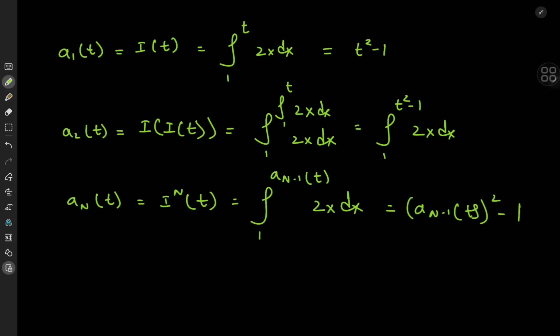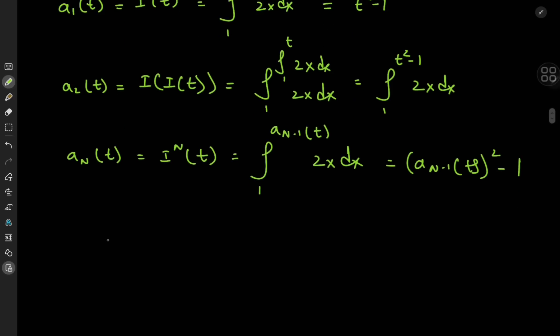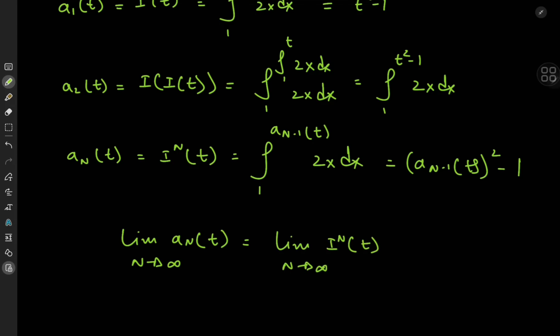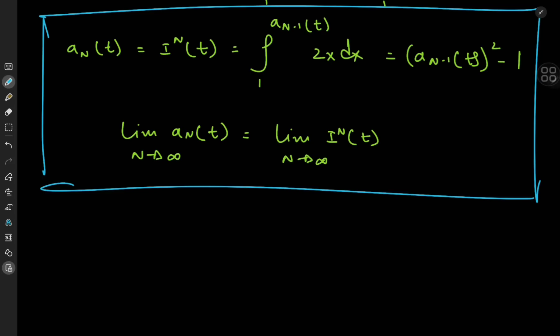Okay, cool. But what exactly were we interested in? We were interested in that infinite stack case, so we're trying to analyze the limit of a sub n of t as n tends to infinity — the limit of the composition of i with itself n times as n tends to infinity. That would be exactly what our infinite stack integral problem is. So we're now looking at the problem from a different perspective: it's no longer purely an integration problem. It's now the question of convergence of a sequence of functions where each function is defined in terms of compositions of an integral function with itself. How on earth are we going to begin the analysis?